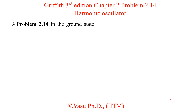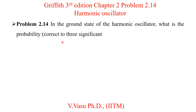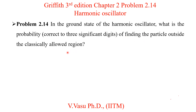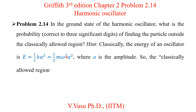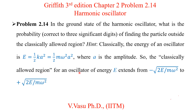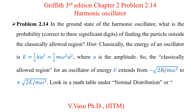Problem 2.14: In the ground state of a harmonic oscillator, what is the probability — correct to three significant digits — of finding the particle outside the classically allowed region? The hint given is that classically the energy of the oscillator is E = ½kA² = ½mω²a², where a is the amplitude. So the classically allowed region extends from −√(2E/mω²) to +√(2E/mω²).